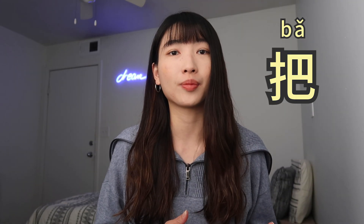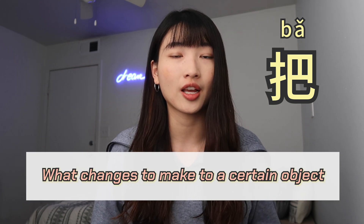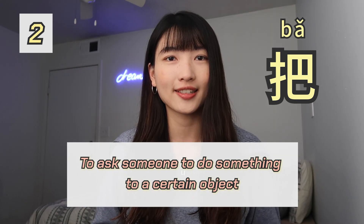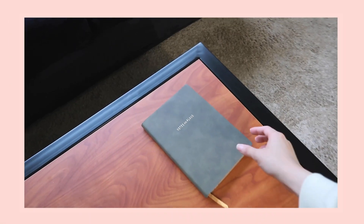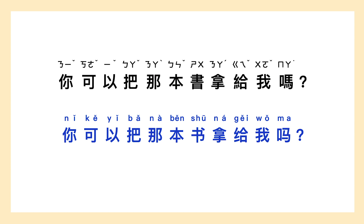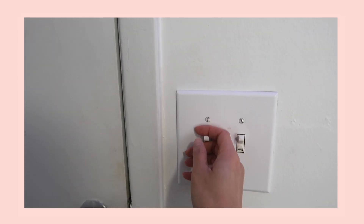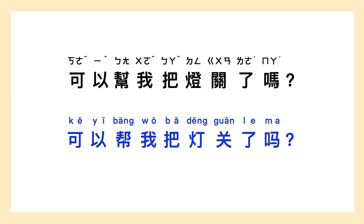Other than using the 把 construction to talk about what changes to make to a certain object, we can also use the 把 construction to ask someone to do something to a certain object. For instance: 你可以把那本书拿给我吗? — Could you hand me that book? 记得把药吃了。 — Remember to take the pill. 可以帮我把灯关了吗? — Could you help me turn off the light?